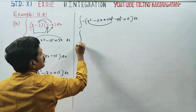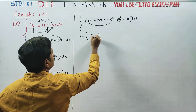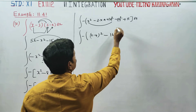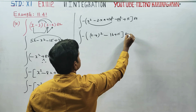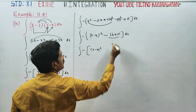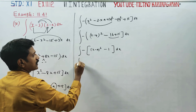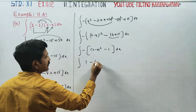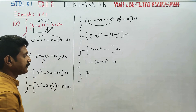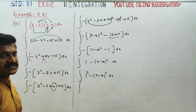Using completing the square: minus 2ab plus b squared integration. This gives minus of (x minus 4) whole squared, since 4 squared equals 16, plus 15 dx. So you get minus of (x minus 4) whole squared, 16 minus 15 equals minus 1.